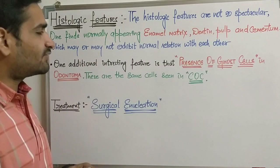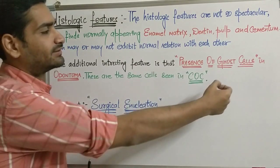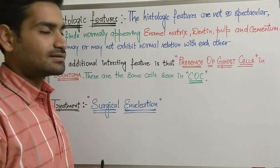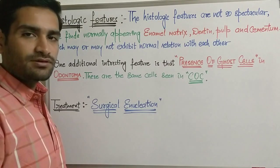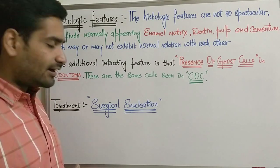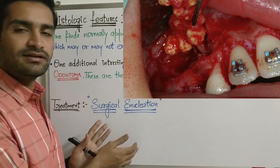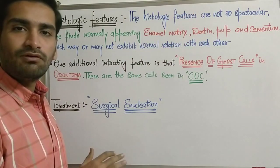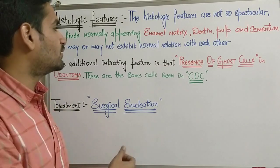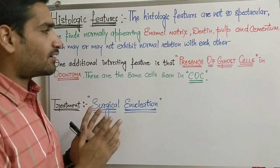One additional interesting feature regarding the histology of odontoma is the presence of ghost cells — ghost cells are seen in histological sections of odontoma. These are the same ghost cells discussed in calcifying odontogenic cyst. Regarding treatment, it remains the same: surgical enucleation. Recurrence of this lesion is very rare. The section should be sent to a qualified oral pathologist to confirm the type of odontoma and rule out any association with other disease.